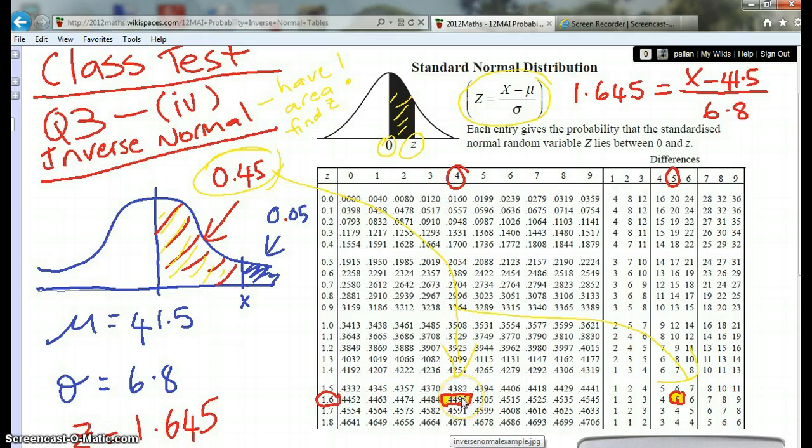So you're going back to front. When you're going the normal way, you look up using this value and this value. When you're inverse and you've got the area, you actually have to look at the answer and work backwards.